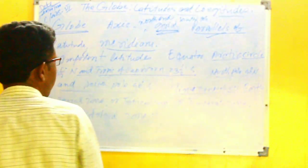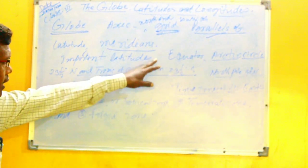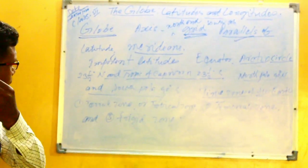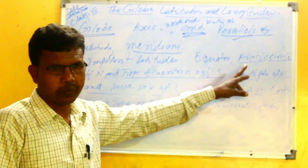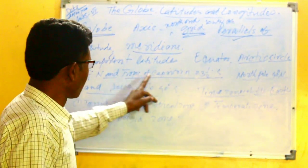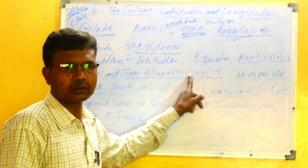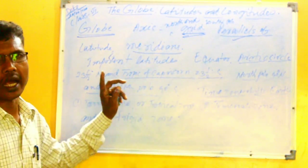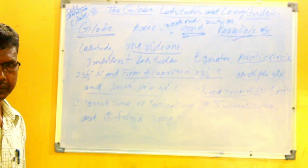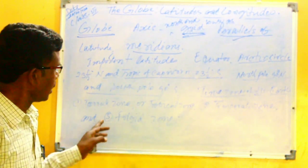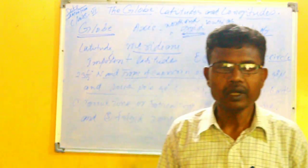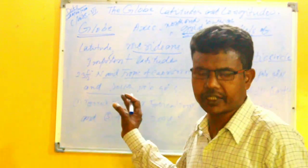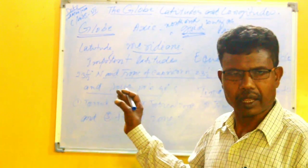Beside the equator, there are four more important latitudes in the northern and southern hemispheres. They are the Tropic of Cancer, the Tropic of Capricorn, the Arctic Circle, the Antarctic Circle, the North Pole, and the South Pole. They are influenced by nature and physical laws, therefore these latitudes are important.